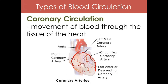If you will notice, we have different arteries here in the picture — arteries that cover the heart. We have the right coronary artery, left main coronary artery, circumflex coronary artery, and the left anterior descending coronary artery. All of these blood vessels provide oxygenated blood, giving oxygen and nutrients to the heart.